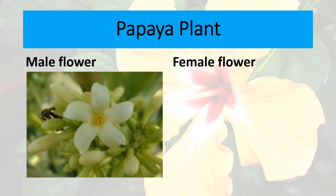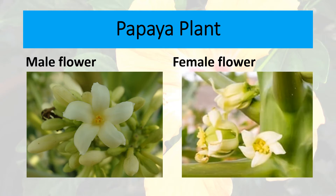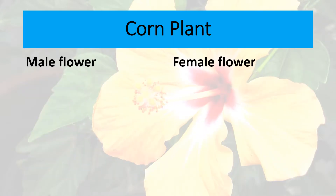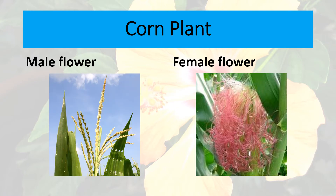This is the male flower and this one is the female flower. Another example of a unisexual flower is the corn plant — it also has a male flower and a female flower.